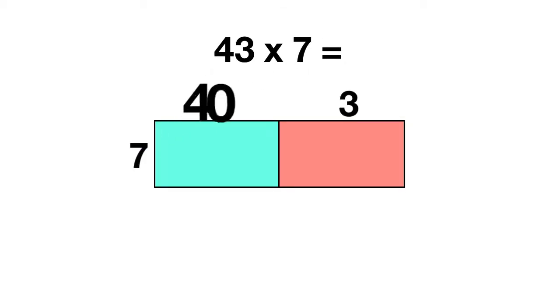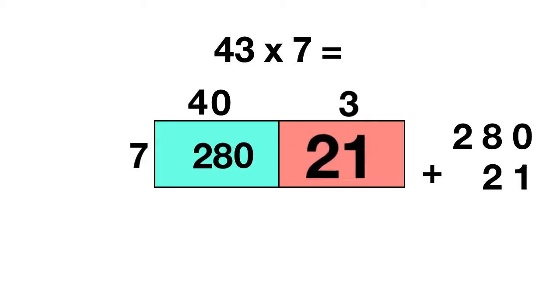In the blue box you multiply 40 times 7. And 40 times 7 is 4 times 7, or 28, with 1 extra 0, so 280. In the pink box we multiply 3 times 7. 3 times 7 equals 21. When you add those together, 280 plus 21, you get 0 plus 1 is 1, 8 plus 2 is 10 so you regroup with a 0 on the bottom and your 10 next door, and then 1 plus 2 is 3. So 43 times 7 equals 301.